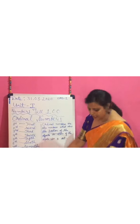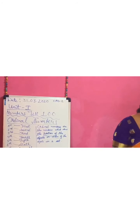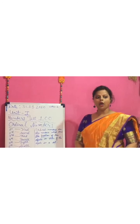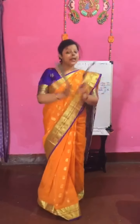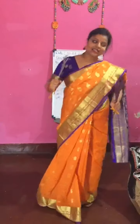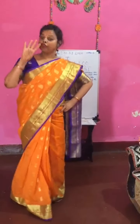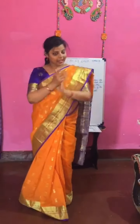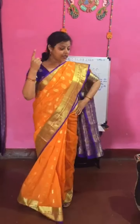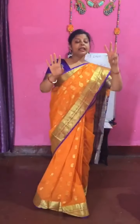Our next one is ordinal number songs — get ready! You can also sing along with me. 1st — jump, jump, jump. 2nd — clap, clap, clap. 3rd — turn around. 4th — dance, dance, dance. 1st, 2nd, 3rd and 4th. 5th, 6th and 7th. 8th, 9th, 10th. These are ordinal numbers! 1st, 2nd, 3rd and 4th. 5th, 6th, 7th, 8th, 9th and 10th. These are ordinal numbers.